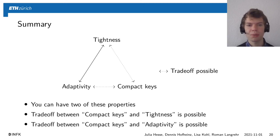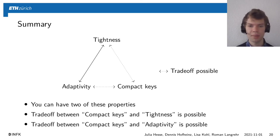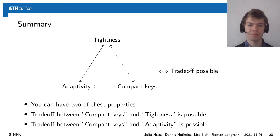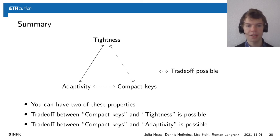To summarize, our work looked at NIKE and focused on three properties — tightness, adaptivity, and compact keys — and showed that we can achieve any two of these three properties. Our first construction achieves adaptivity and shows that a trade-off between tightness and compact keys is possible. Our second construction achieves tightness and shows that a trade-off between adaptivity and compact keys is possible. Thank you for your attention.